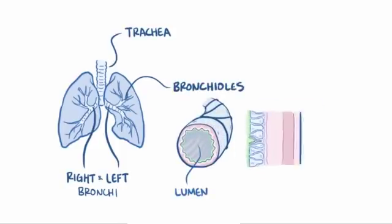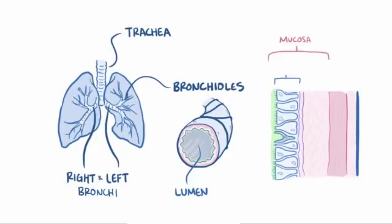In the bronchioles, you've got the lumen, the mucosa, which includes the inner lining of epithelial cells, as well as the lamina propria, and the submucosa, which is where the smooth muscle lives.